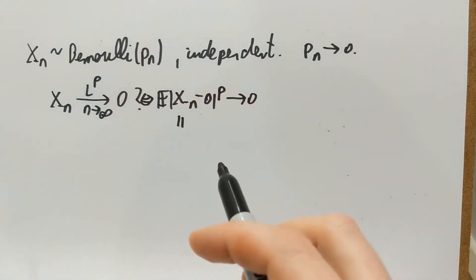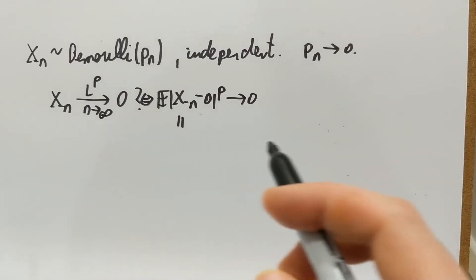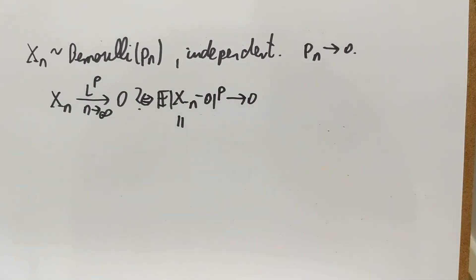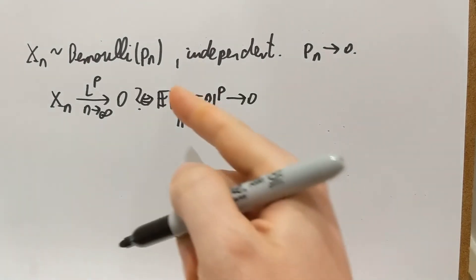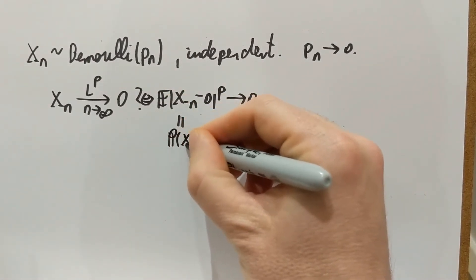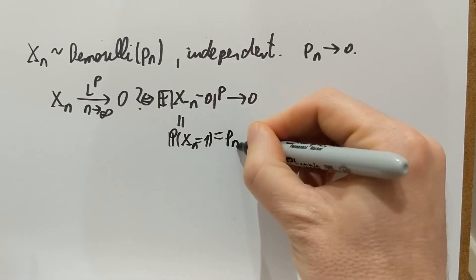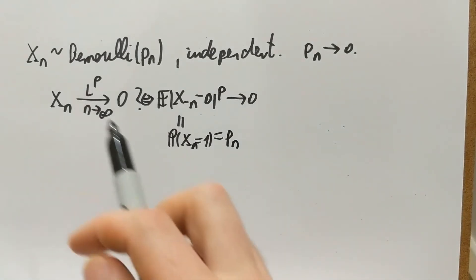Xn is Bernoulli, so it's zero or one. Zero or one minus zero is still zero or one. One to the P's power is still one. So in fact |Xn - 0|^P is just an indicator that Xn is one. It is one when Xn is one and zero otherwise. Therefore the expectation of that indicator is simply the probability that Xn is one, which we denoted by Pn. So we have LP convergence if and only if Pn goes to zero.